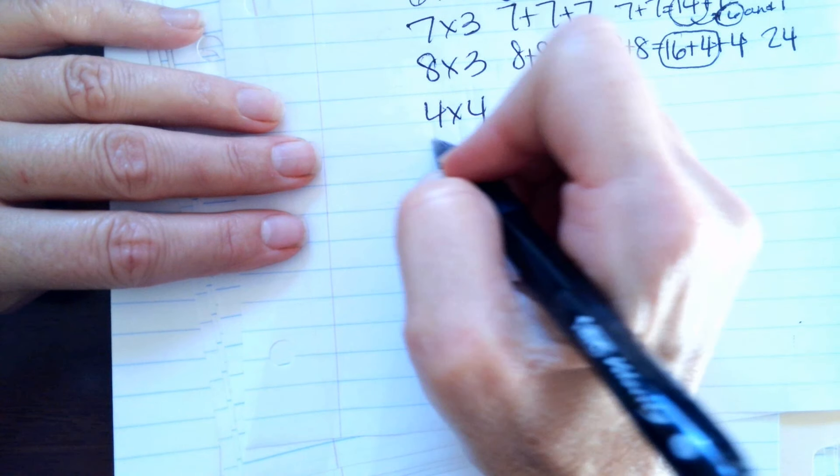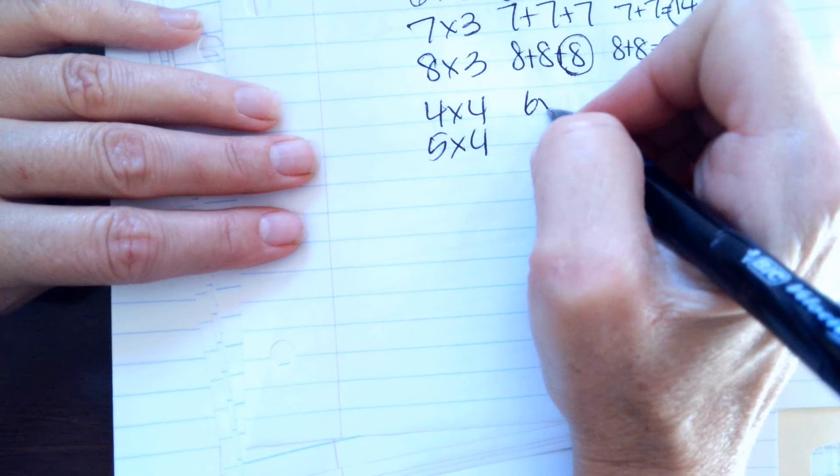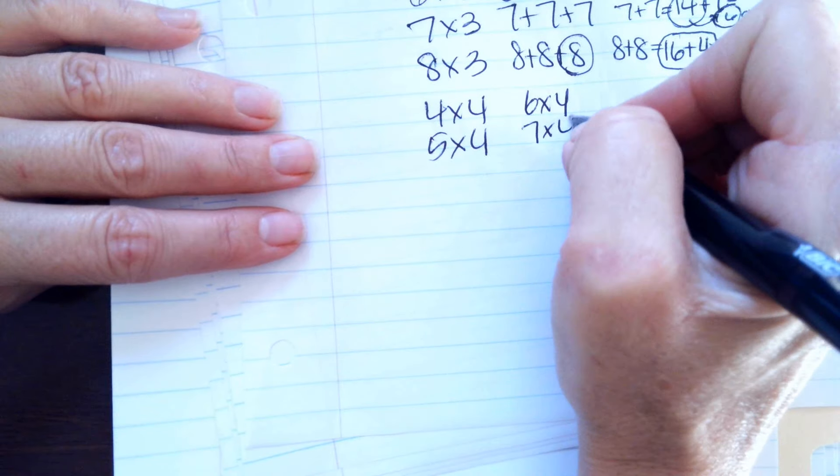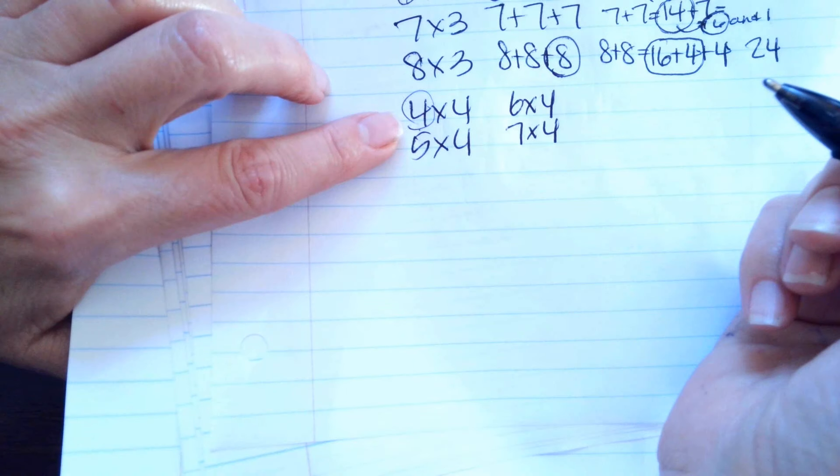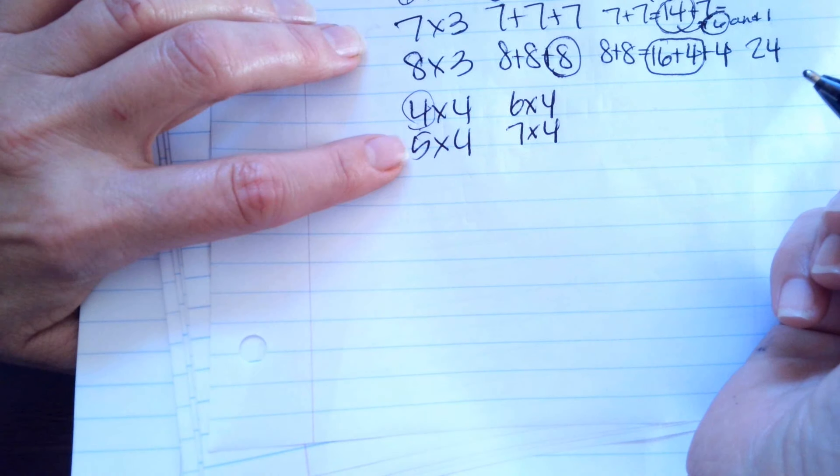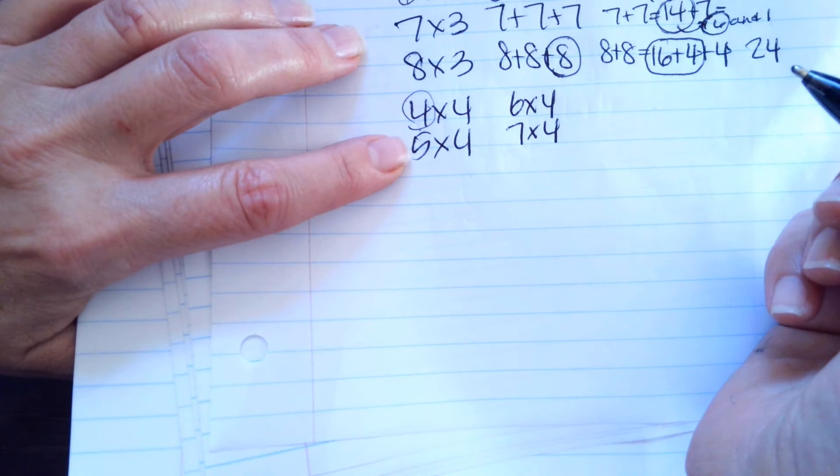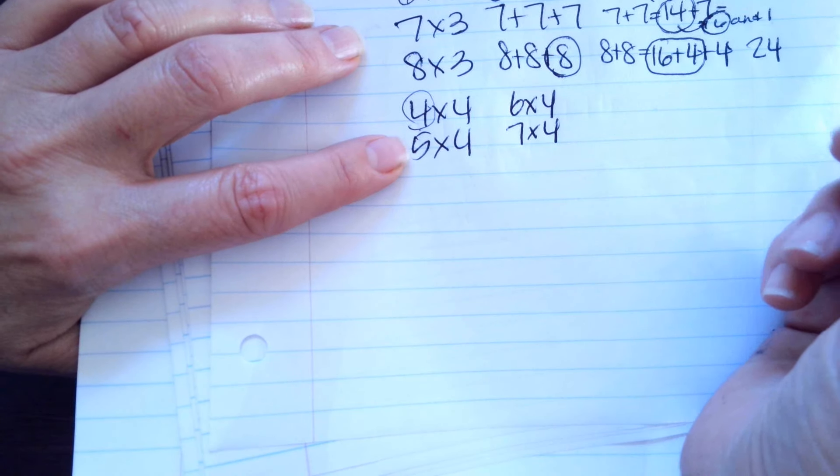All right 4 times 4, 5 times 4, 6 times 4, and 7 times 4. We're going to use this strategy. 4 doubled is 8 and 8 doubled is 16. 5 doubled is 10 and 10 doubled is 20.